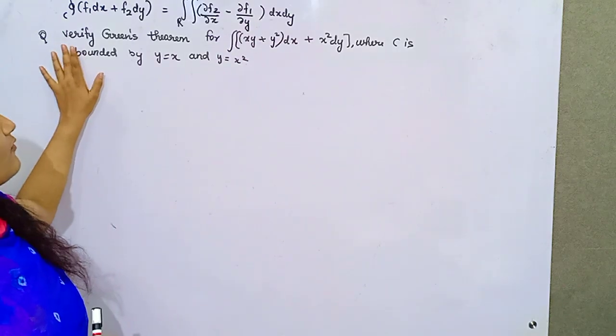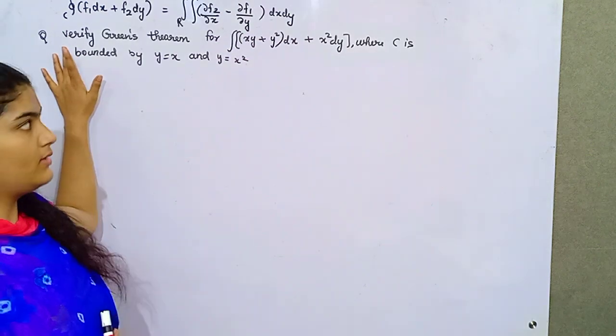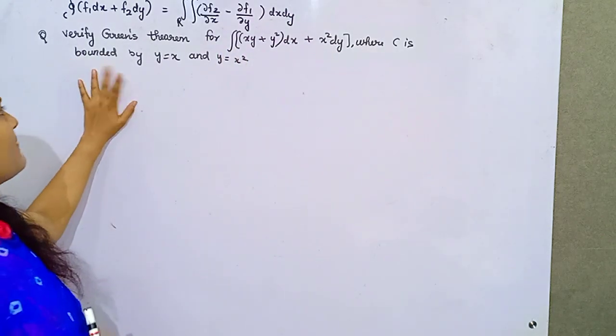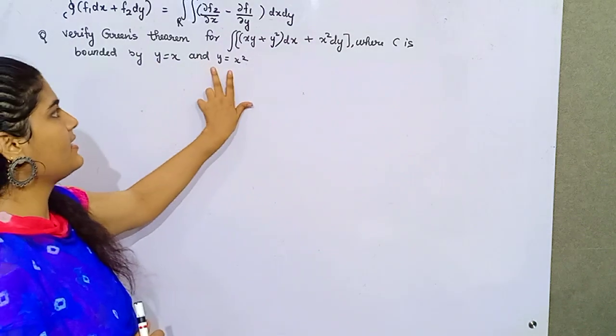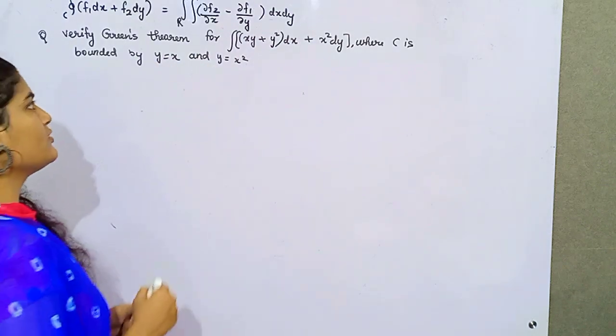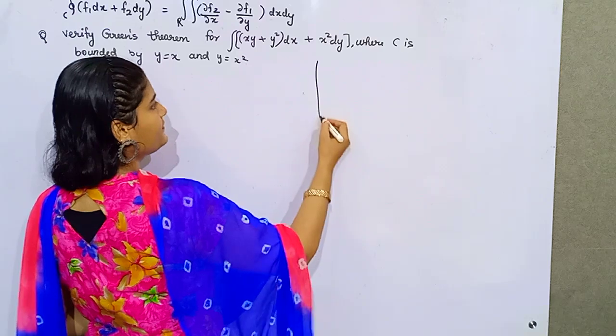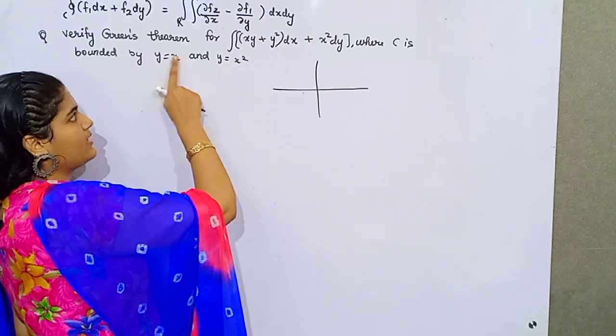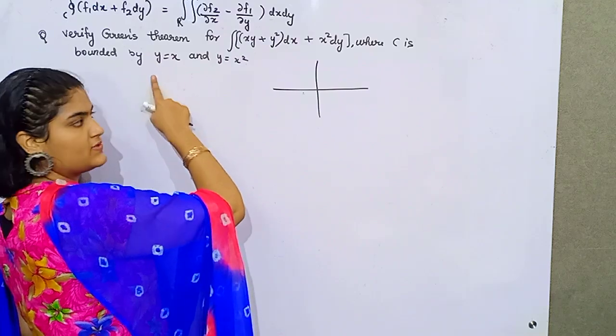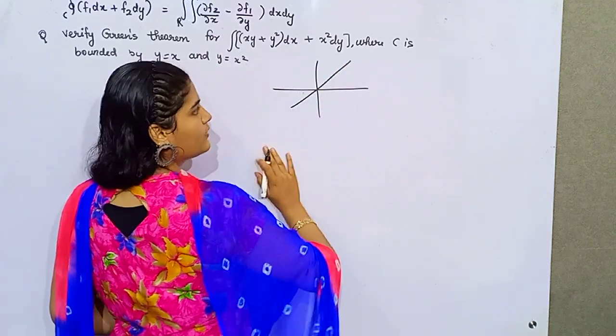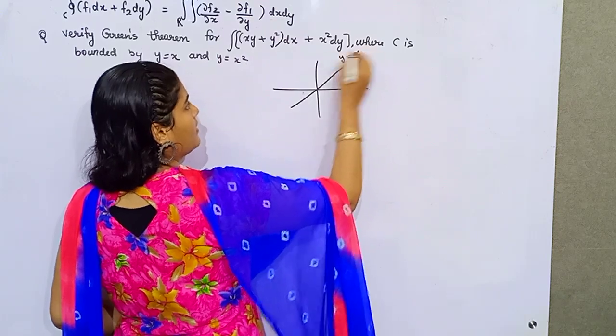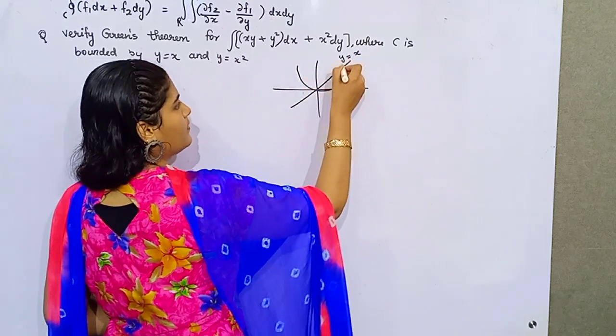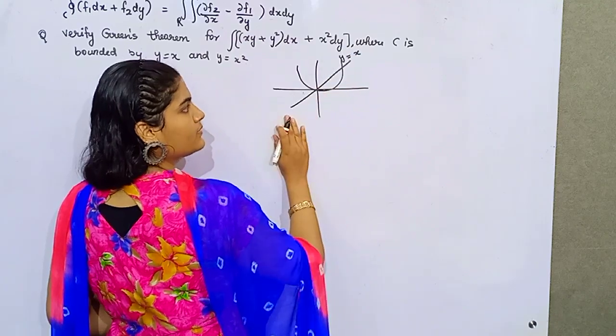We need to verify Green's theorem for this region where the curve is bounded by a line and a parabola. First of all, make the figure. You know y equals x: if you put y equals 1, x would be 1; 2, 2; 3, 3. So it would be a straight line passing through the region. And this is y equals x squared, which would be the parabola.